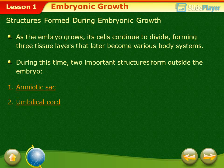As the embryo grows, its cells continue to divide, forming three tissue layers that later become various body systems. During this time, two important structures form outside the embryo.